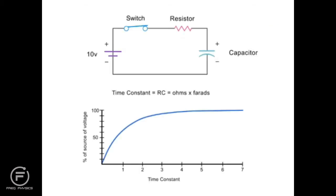For example, in this circuit, if you have a 1 megaohm resistor and 5 microfarad capacitor, the time constant would be 5 seconds.